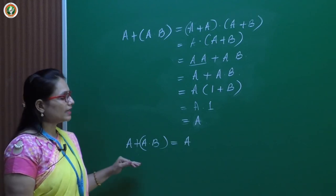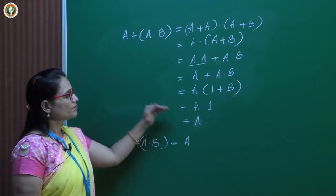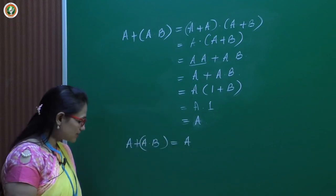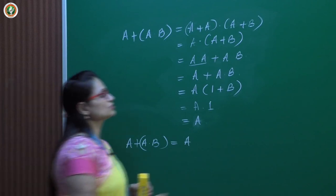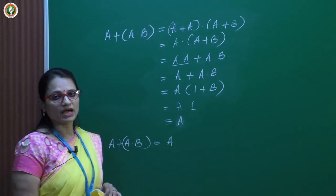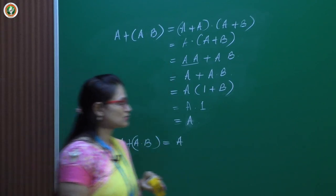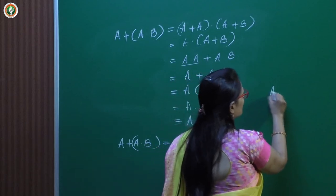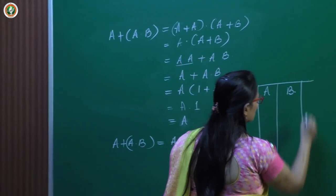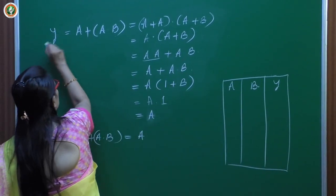I hope you understood. Like this, any given theorem — whatever theorems we have discussed in the previous class — can be evaluated or proved with this method. Now let us see how to prove this using the truth table. In this expression, how many inputs do we have? We have only two inputs A and B. Let us construct the truth table for A and B and I am going to call this output as Y.